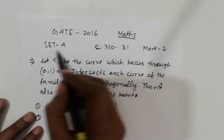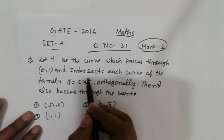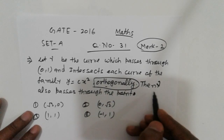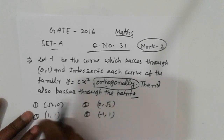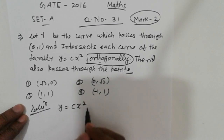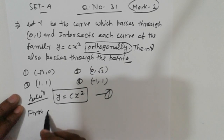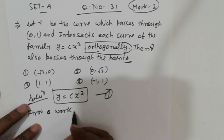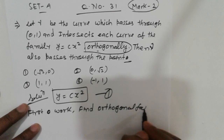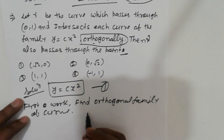GATE 2016 mass state equation number 31. A curve passing through (0,1) intersects each curve of the family y = cx² orthogonally. Orthogonal trajectories is the important topic here. The problem also asks which point the orthogonal curve passes through. First, find the orthogonal family of curves.